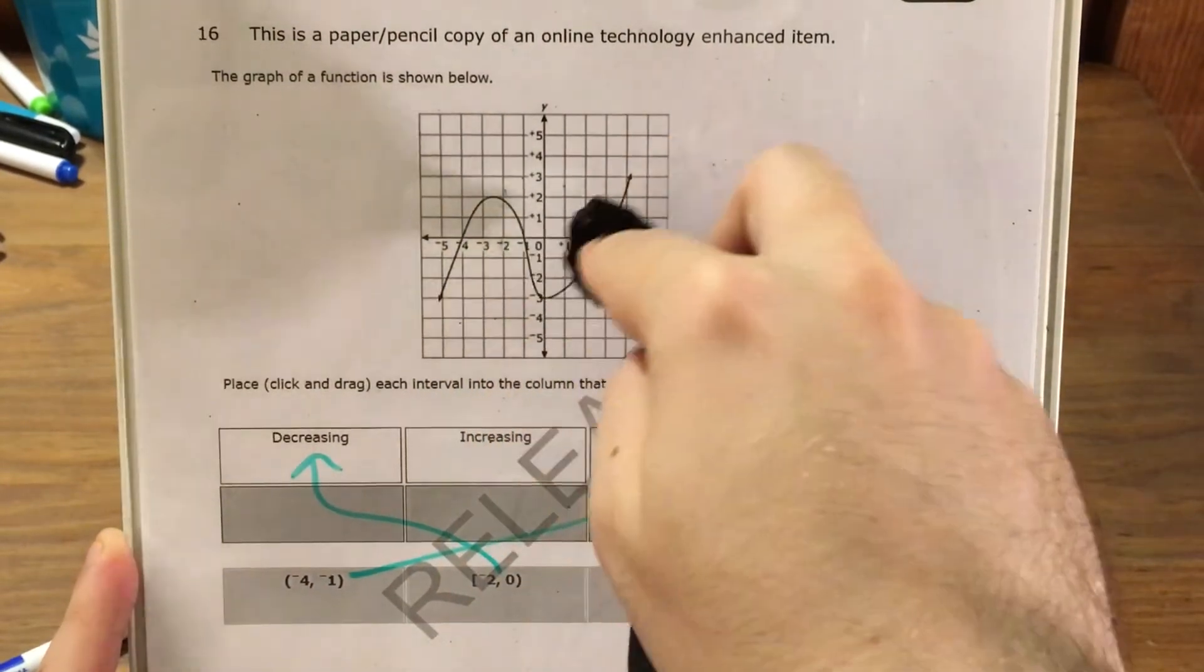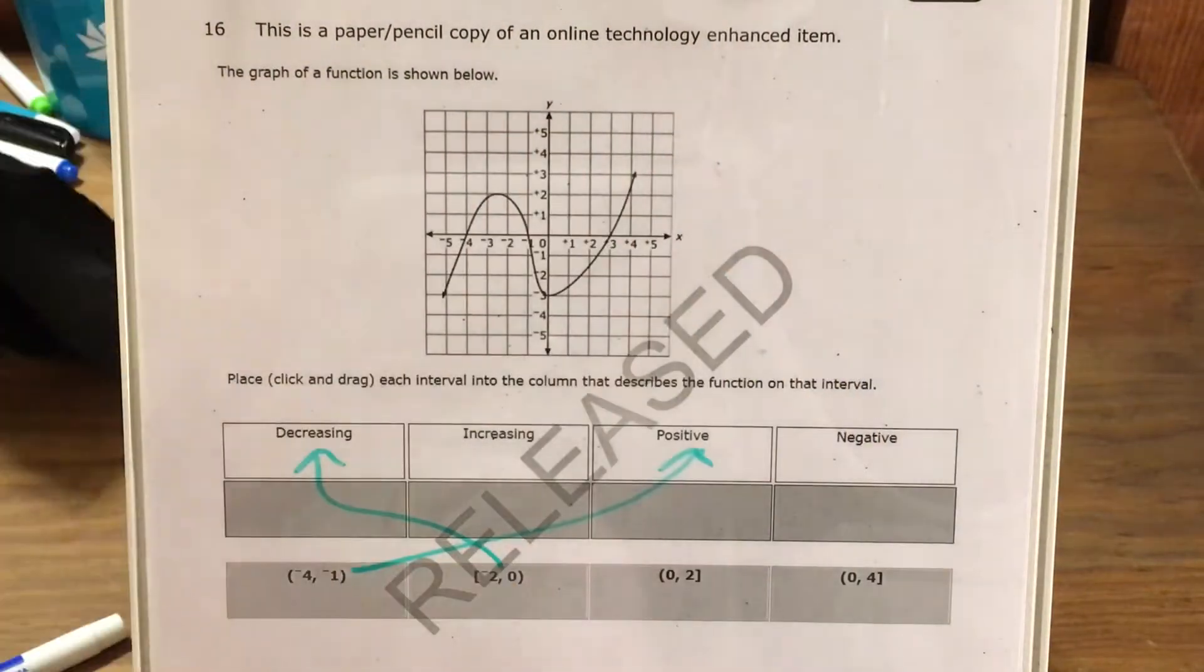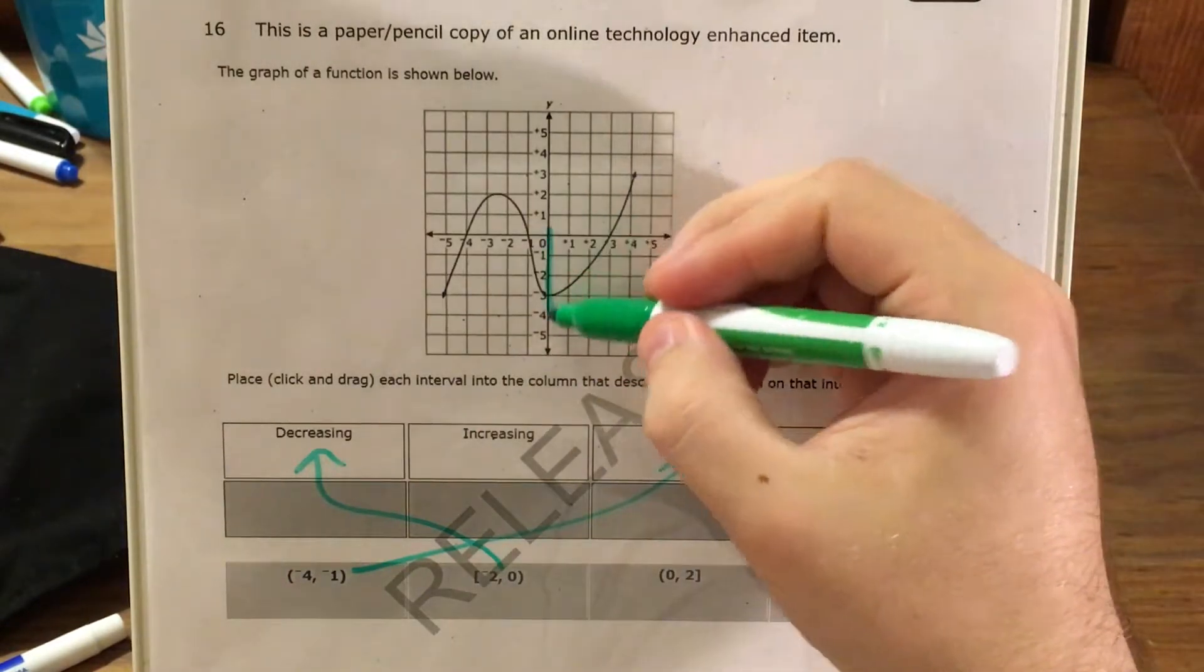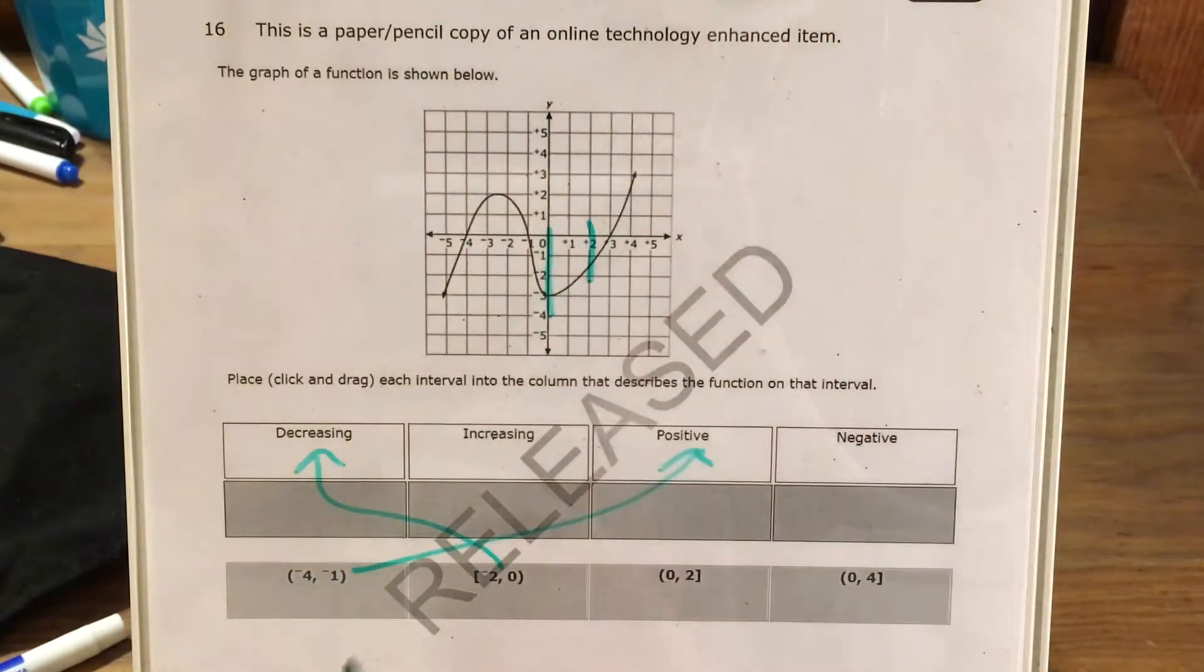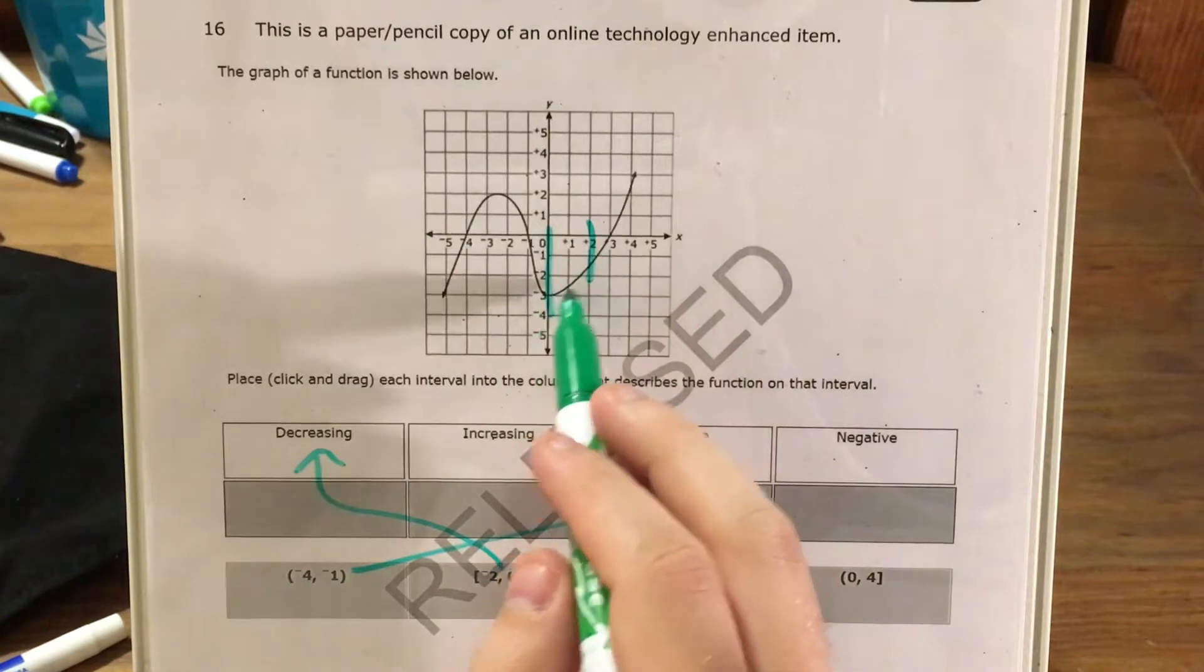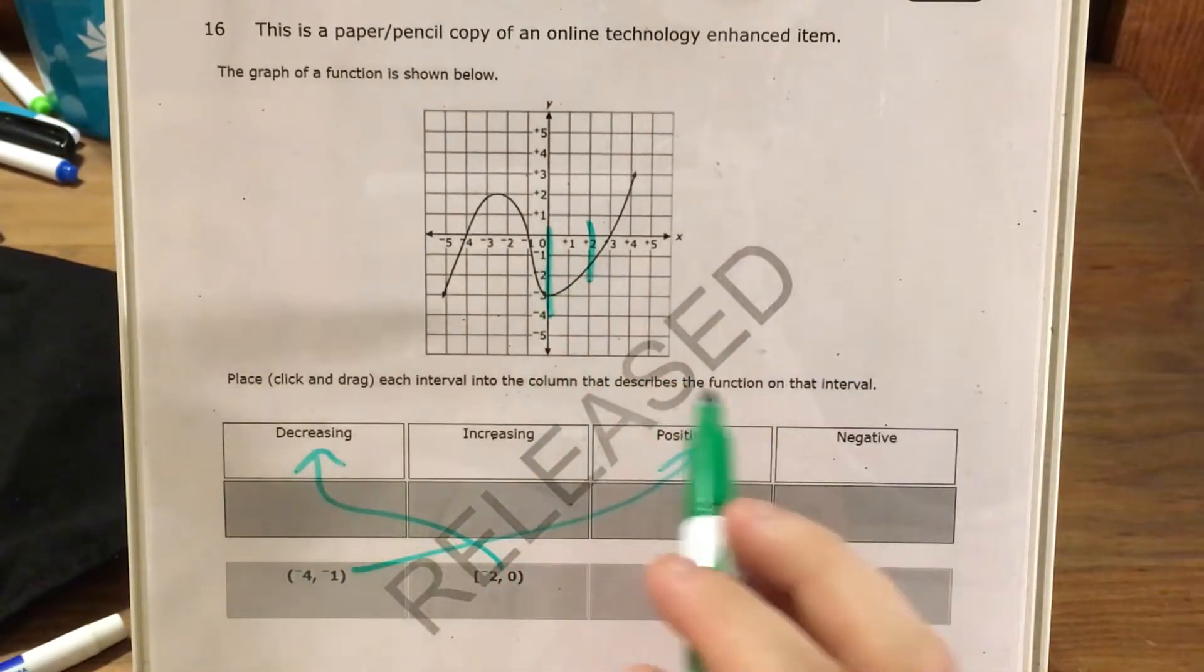Next is the interval from 0 to 2. So from 0 to 2, we could say this is increasing. We could also say it's negative. Since we can't really narrow it down from here, I'm just going to go ahead and look at this last interval...